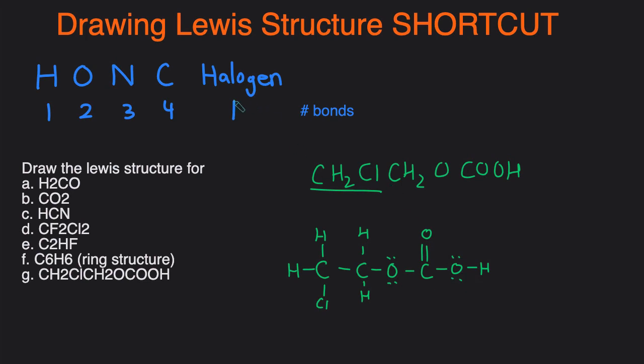And that's it — that's the shortcut for drawing Lewis structures when you're dealing with compounds that are neutral. If you want to learn how to ace chemistry, learn the best ways to study, and get some neat tricks and tips for your exams, head over to my website and get the free guide, '12 Secrets to Ace Chemistry,' at www.conquerchemistry.com/chemsecrets. I'll include a link in the description below. Keep working hard and continue the good work.